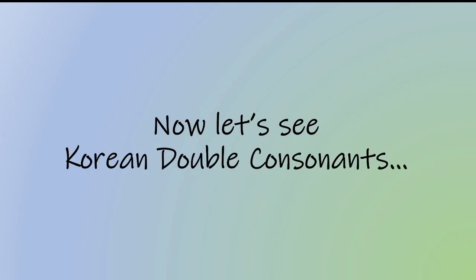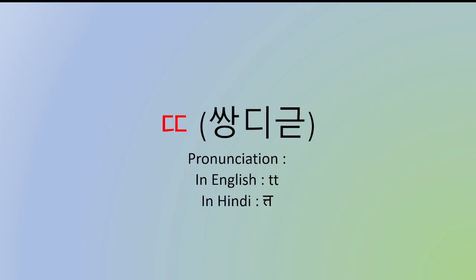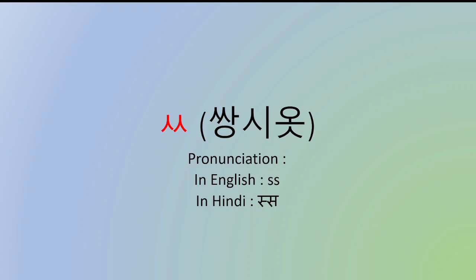Now, let's see Korean double consonants. First is ㄲ — ka. It sounds similar to ka but it is more forced at the beginning — as you can see, I have written ka, forced pronunciation. Then we have ㄸ — tha. After this, we have ㅃ — pa. Then we have ㅆ — sa. Jaise ek snake ki hissing sound hoti hai, usi tarha se iska pronunciation hai — sa. Then we have ㅉ — cha.